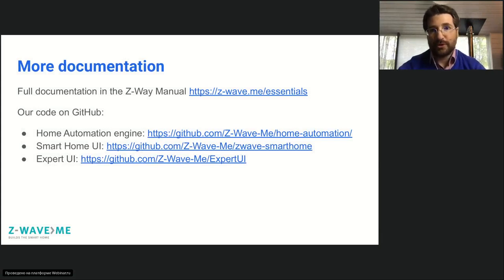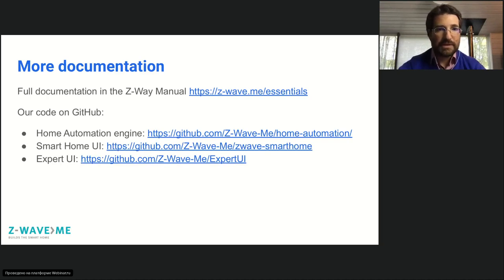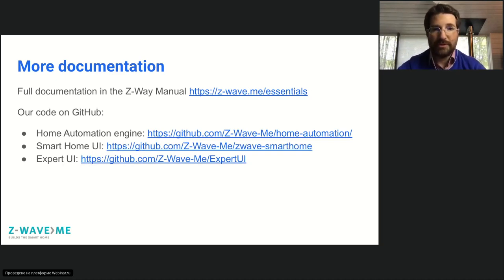Let's start with where to get more information. There is a very comprehensive Z-Way manual available online where you can find all information about Z-Way systems, especially about the home automation subsystem, APIs, and scripting. There is also a GitHub repository of Z-Way where you can find the home automation engine, which is open sourced, and smart home and expert user interfaces.